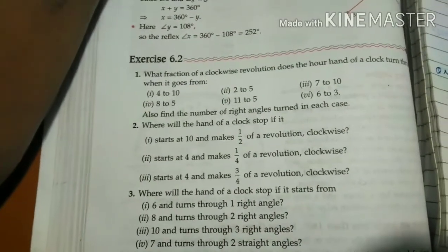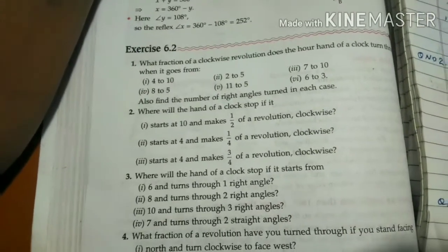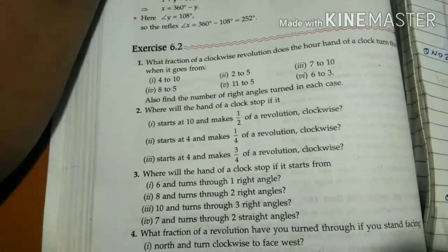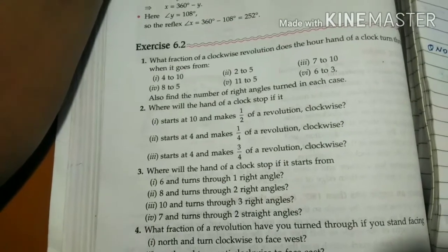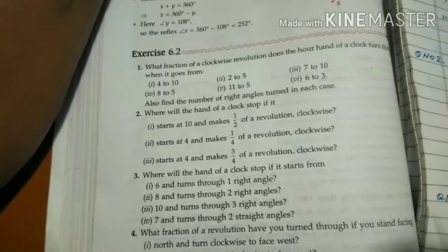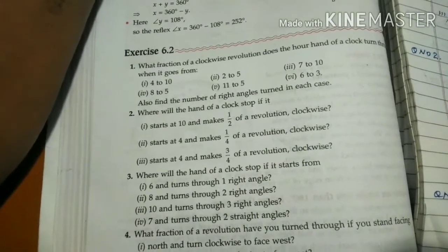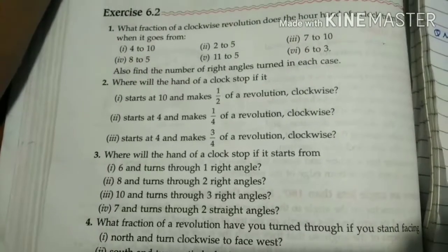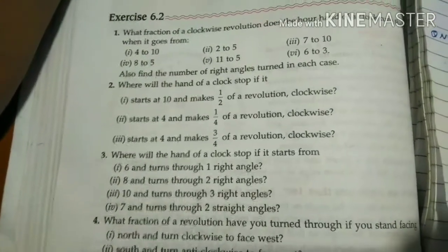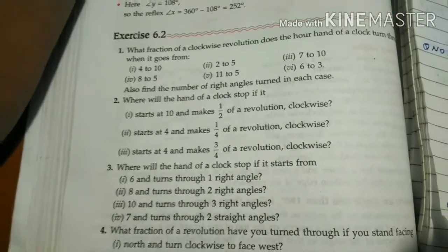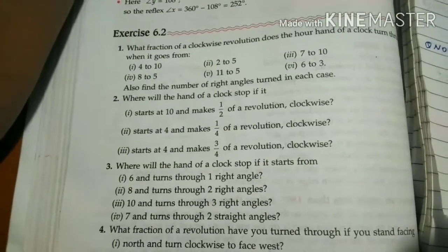So 3 upon 12 equals 1 upon 4. That's the remaining part of question number 1. Try to solve yourself. Now question number 2: where will the hand of a clock stop if it starts at 10 and makes half a revolution?